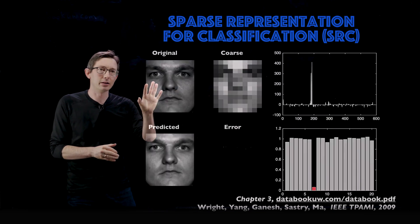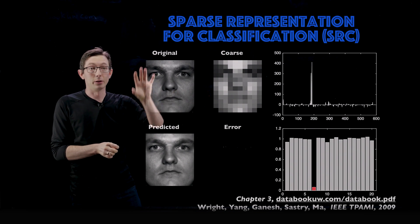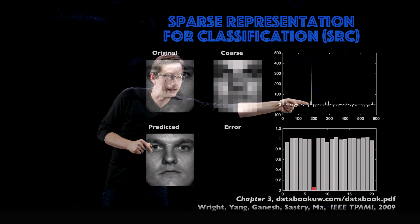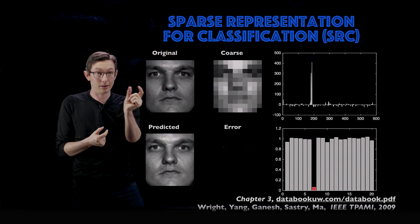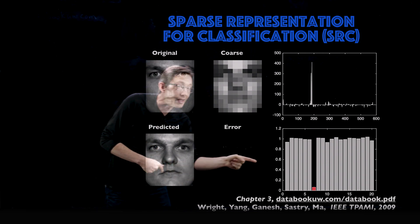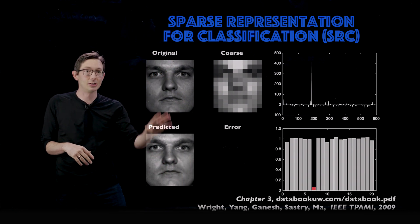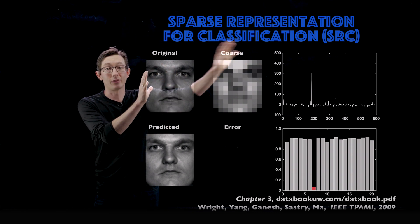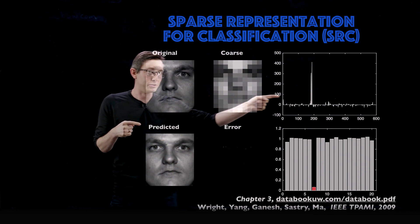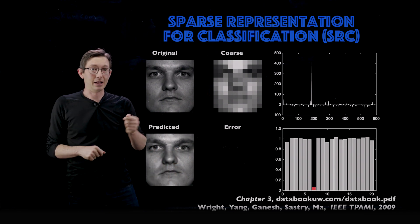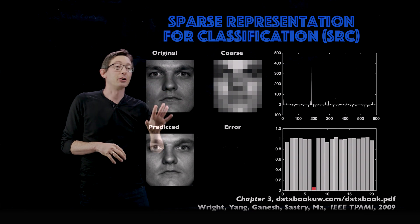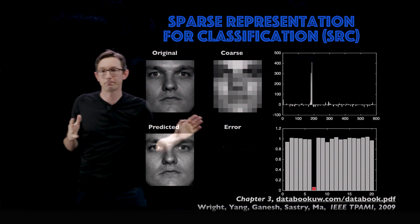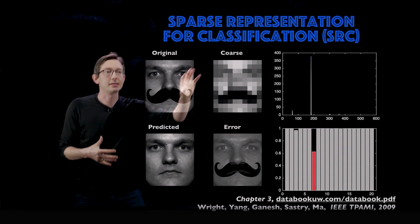Here are some cool examples. With an original face with no noise, you coarse-grain it, run it through the optimization, and very clearly see activity in one region of the library — corresponding to person seven. The predicted image is very similar to the original. Importantly, this test image was removed from the library, so it's a real test: the algorithm finds the closest images of that person and interpolates between them.